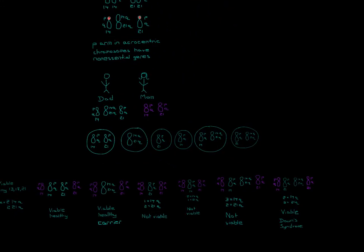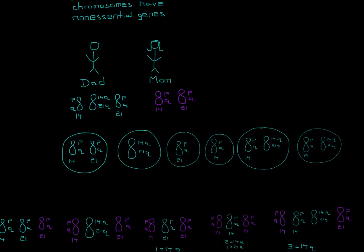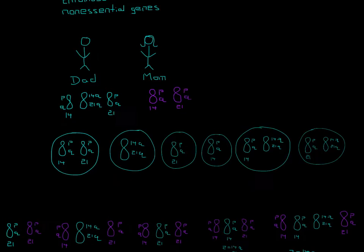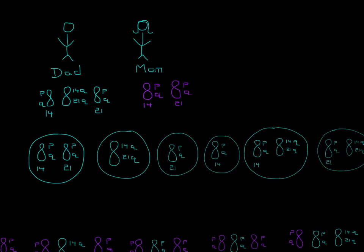Moving on to an actual example: you have a dad who has the Robertsonian translocation and a mom who's completely normal. Let's go through the gamete variation the dad could have. The dad can have a normal gamete — one 14 and one 21, with both p and q arms present. Or he can have just the 14q and 21q combined. Or just the 21 alone, or just the 14 alone. And also one normal 14 paired with one Robertsonian translocation, or one normal 21 paired with the translocation.